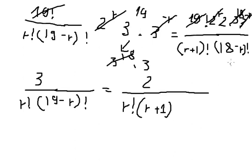And 18 minus r factorial can be written in terms of 19 minus r factorial.